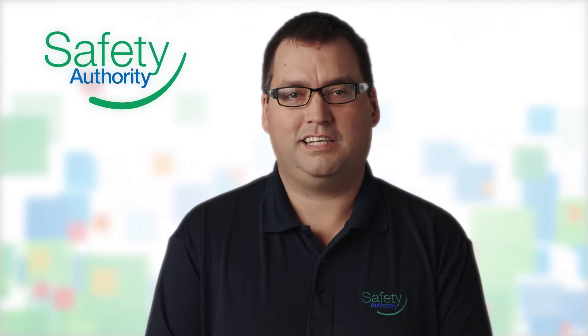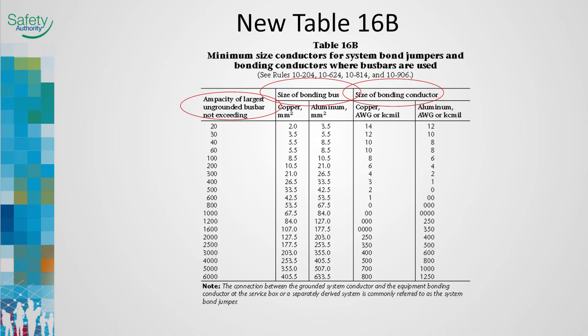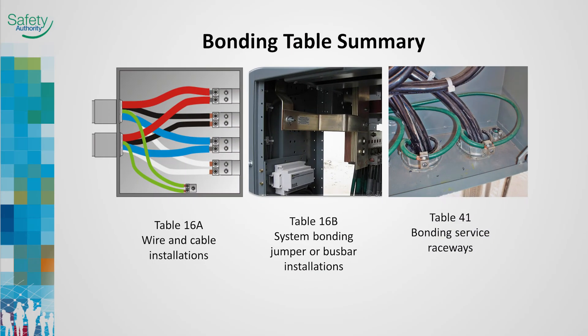Table 16B provides the minimum size bonding conductor for use as a system bonding jumper. Table 16B also provides the minimum size bonding conductor required when bus bar is used as the wiring method. The ampacity of the bus bar installation must be known before selecting a corresponding bonding conductor. The table is further divided into columns when using the bus bar or bonding wire. This slide illustrates the correct table to be used for the installations depicted.